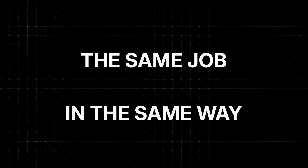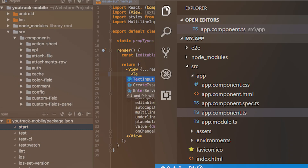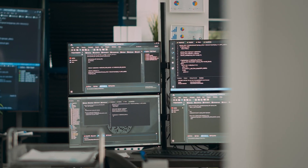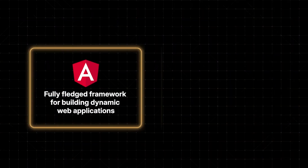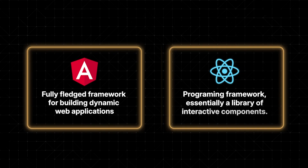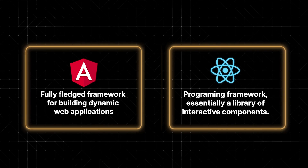Despite doing the same job in kind of the same way, there are some pretty significant differences. The key to understanding these differences is what the platforms are for and the philosophies behind them. Angular is a fully fledged framework in which you can build dynamic web applications. React is a programming framework — essentially a library of interactive components you build your user interfaces with. The key differences are best demonstrated through the companies that use each platform.